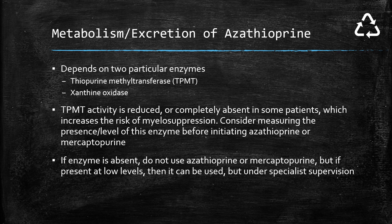If it comes to a situation where you need both allopurinol and azathioprine, you'll have to reduce the azathioprine dose to a quarter of the original dose. When you look at the BNF, azathioprine is generally dosed by weight. So if a patient is ultimately dosed at 100 milligrams once a day, in that case we would give one quarter of the entire dose, which would be 25 milligrams once a day instead.